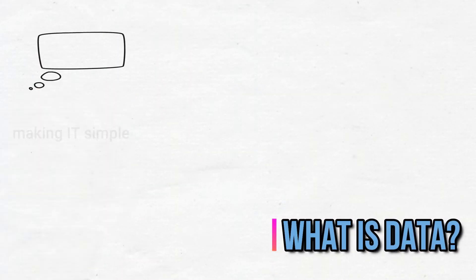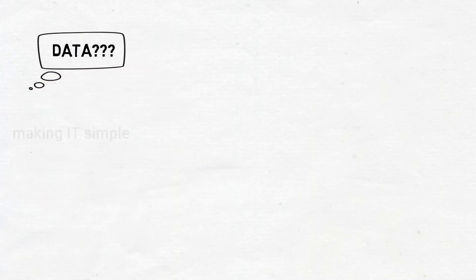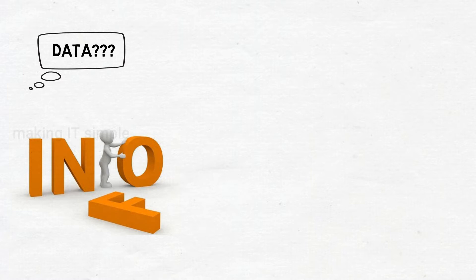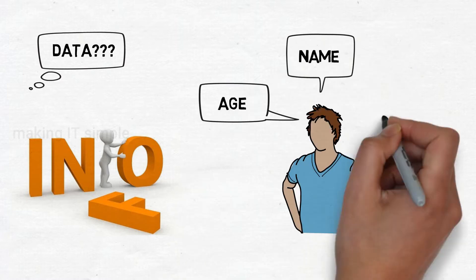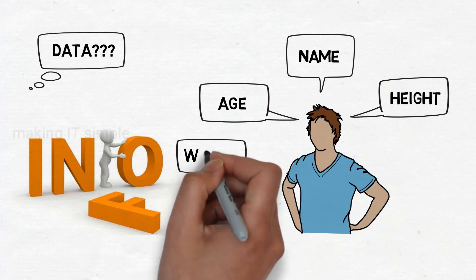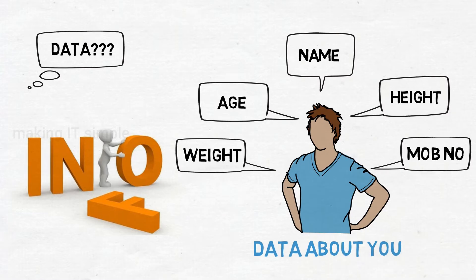Database is about data. So before we see what database is, we will see what is data. Data is simply information about something, like for example your name, your age, your height, your weight, mobile number, etc. So basically this is information about you, that means this is data about you.